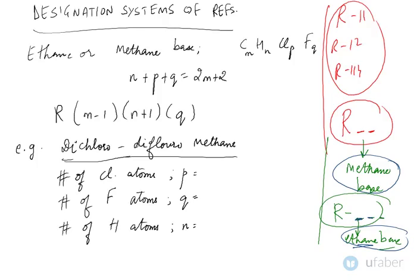The numbers which are assigned to hydrocarbon and halocarbon refrigerants have a special meaning. The first digit on the right is the number of fluorine atoms in the refrigerant. The second is the number of hydrogen atoms, and the third is the number of carbon atoms.